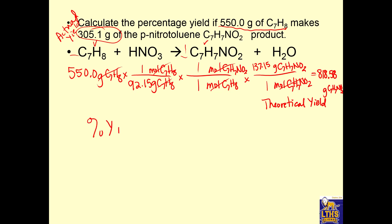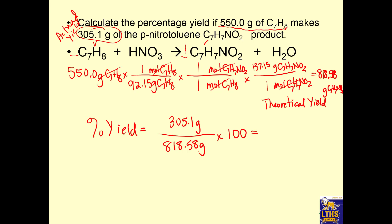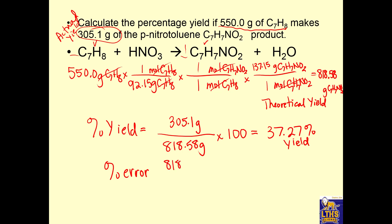Now we do percent yield: 305.1 grams actually produced divided by 818.58 grams that should have been produced, multiplied by 100, gives us 37.27 percent yield. For percent error, you can do 818.58 minus 305.1 divided by 818.58, then multiply by 100. Don't forget to multiply by 100 to get the percentage.